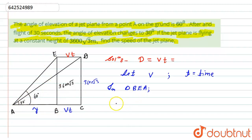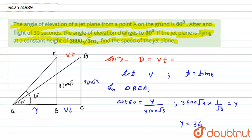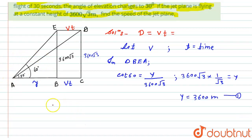In triangle BEA, cot 60° equals adjacent upon opposite, where adjacent is y and opposite is 3600√3. So cot 60° = y / 3600√3. Since cot 60° = 1/√3, we get y = 3600√3 × (1/√3) = 3600 meters. Let this be equation number one.